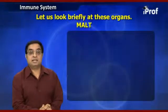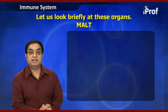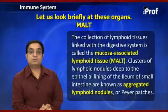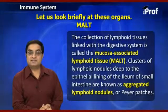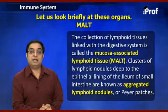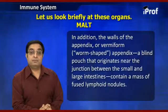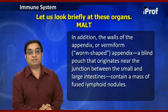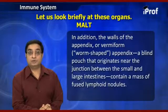MALT — mucosa-associated lymphoid tissue — refers to the collection of lymphoid tissues linked with the digestive system. Clusters of lymphoid nodules deep to the epithelial lining of the ileum of the small intestine are known as aggregated lymphoid nodules, or Peyer's patches. In addition, the wall of the appendix — the vermiform appendix, a blind pouch originating at the junction between the small and large intestine — contains masses of fused lymphoid nodules.